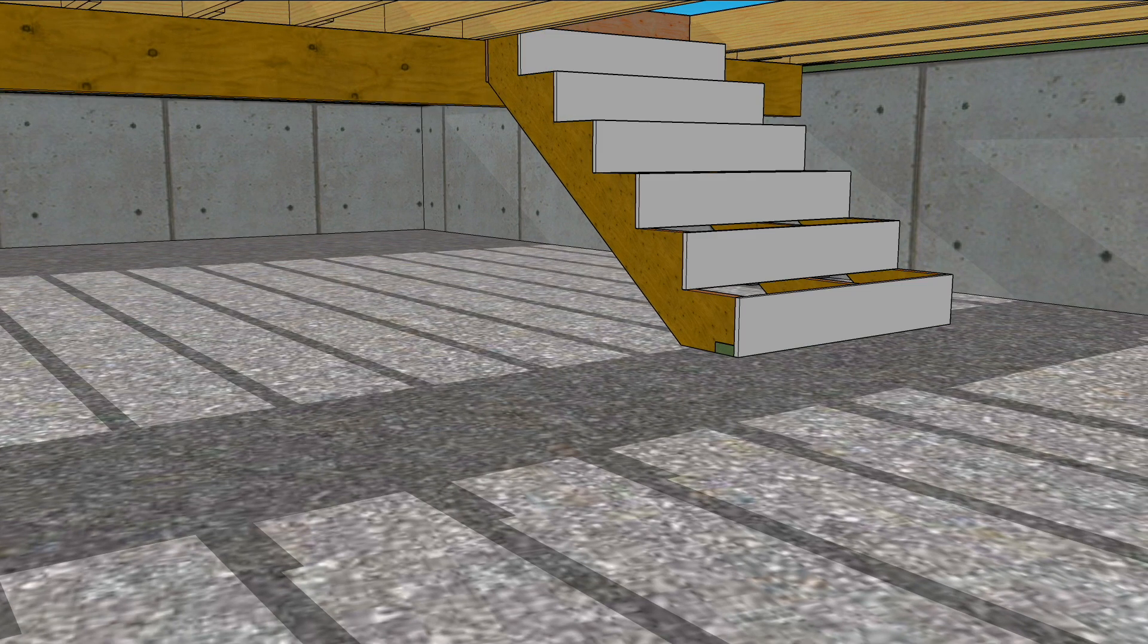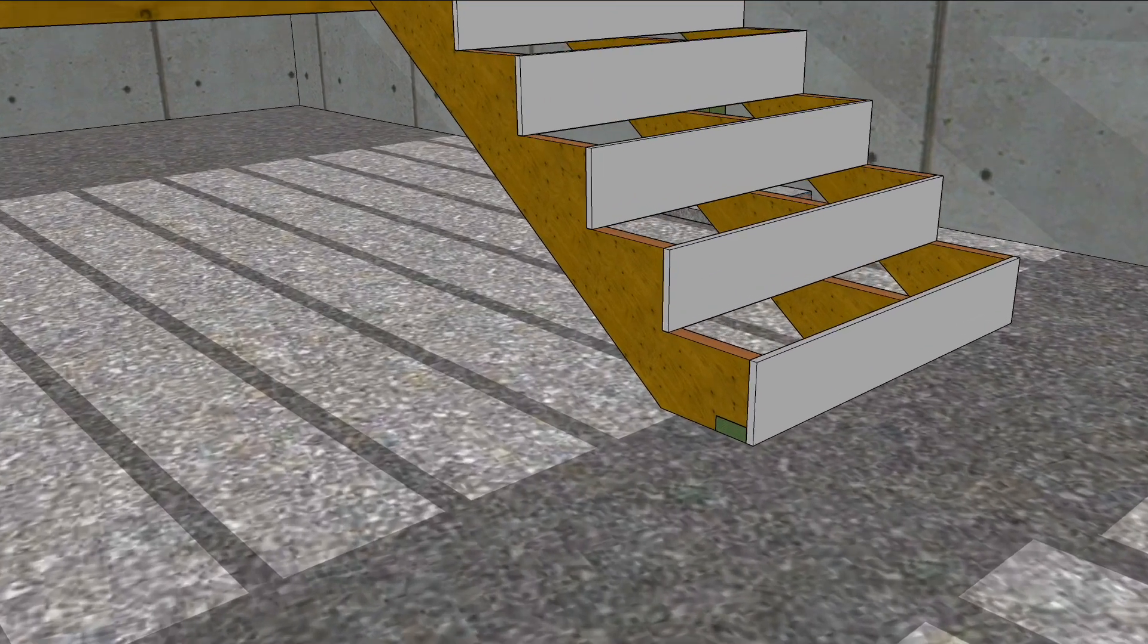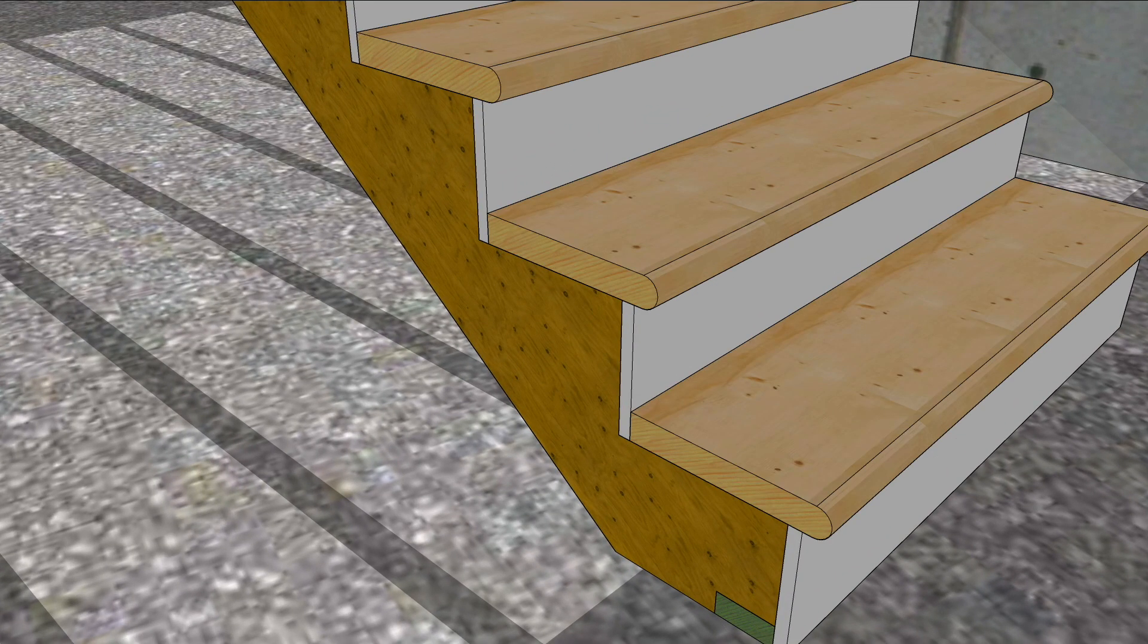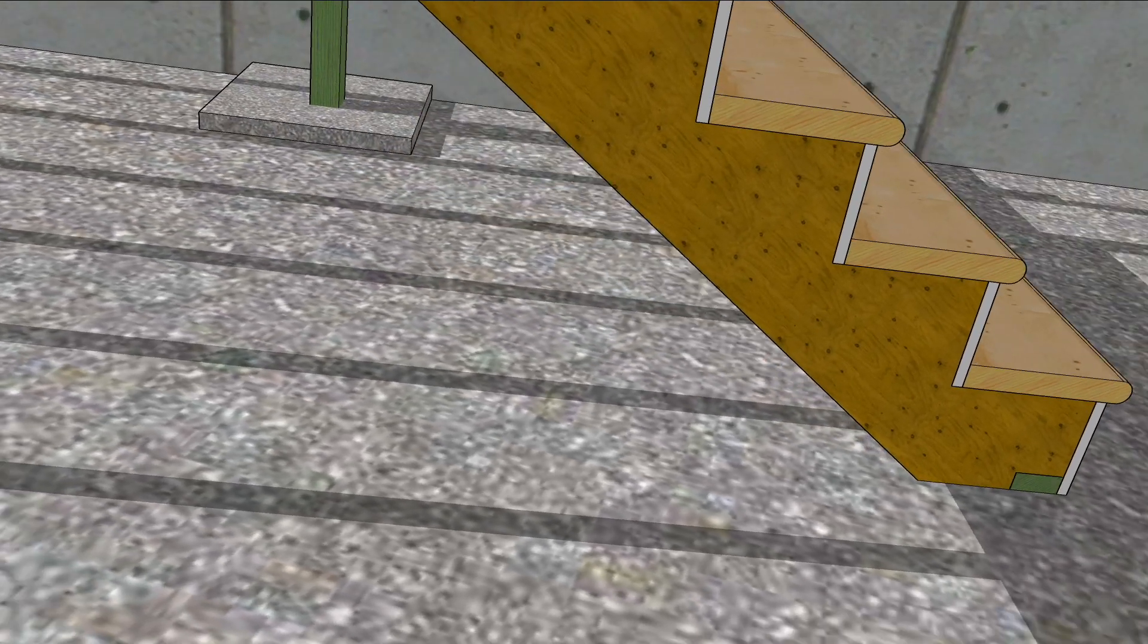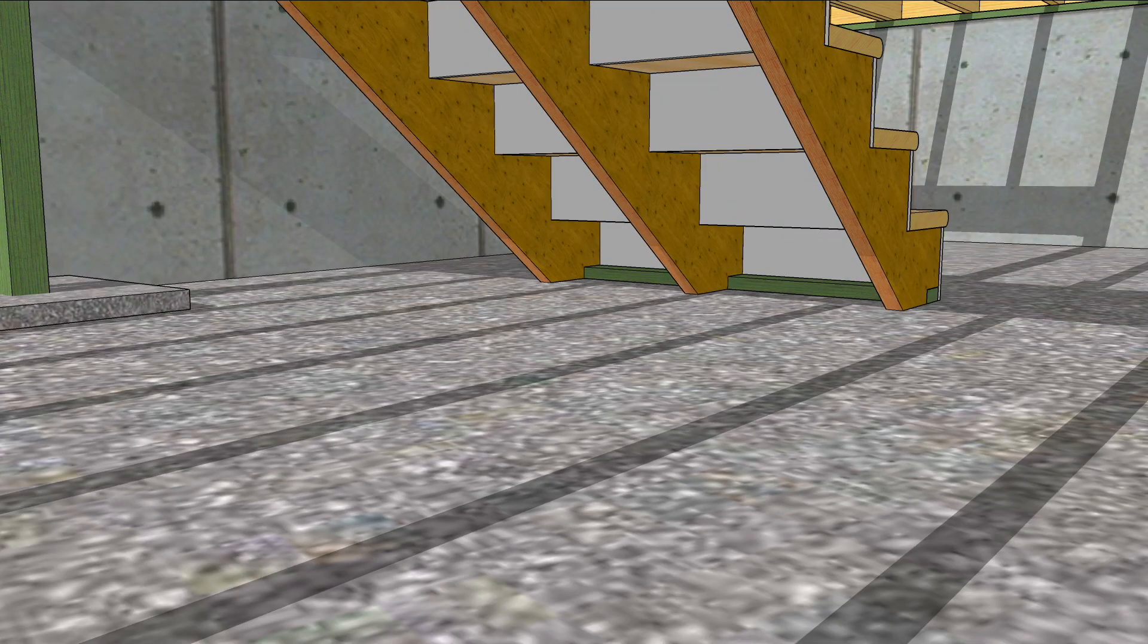Install the risers to the stringers with glue and nails and then glue and fasten the treads in place. It's a good idea to nail through the back of the riser into the edge of the tread to add support and to reduce stair squeaks.